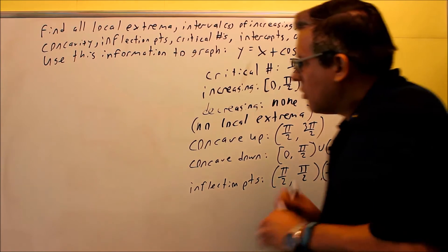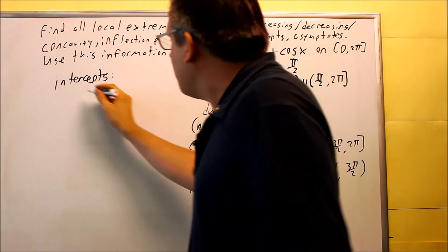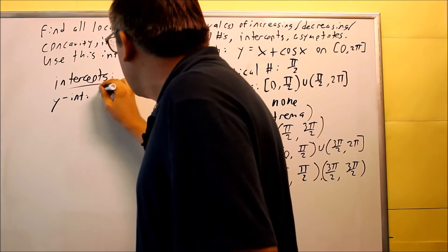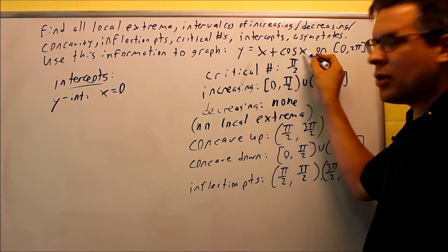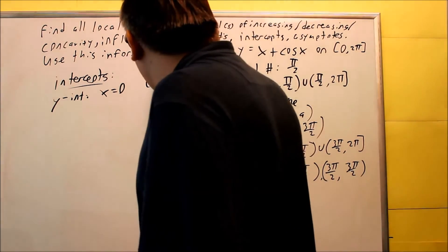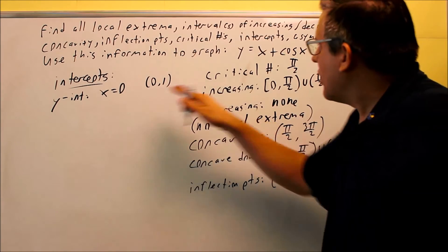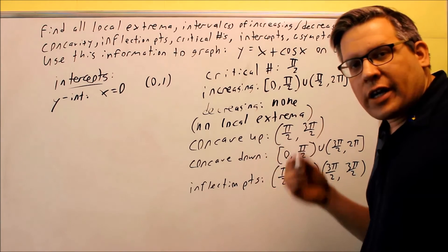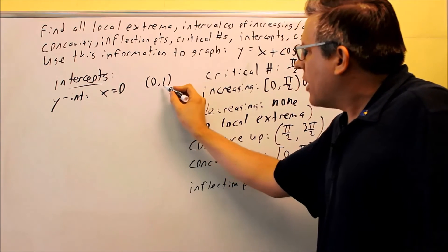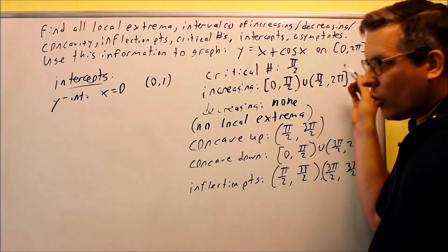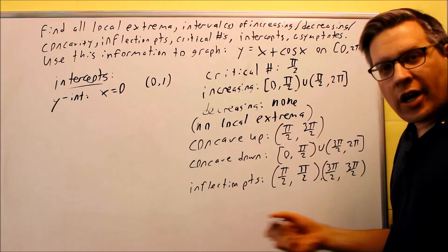Now we find the intercepts. For the y-intercept, set x equal to 0: we get 0 plus cosine of 0, which is 1, giving the point (0, 1). For the x-intercept, we'd normally set the function equal to 0, but that's difficult to solve without a calculator. Since we're at (0, 1) and the function is increasing from there, it won't cross the x-axis anywhere on our interval from 0 to 2 pi.